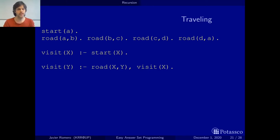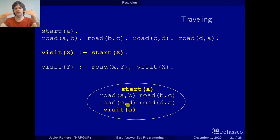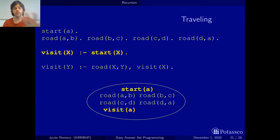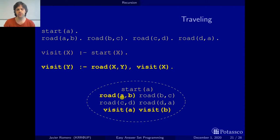Let's see how to find the answer sets of this program. Initially we can apply the facts and we start with them. Then after applying the rules — instead of showing the whole graph, I am only showing the sets we are building at each step. Since we have no choice rules, at each step there will be a unique set. When we apply the rule that tells us that for every x if we have start(x) then we must also have visit(x), since we have start(a) we add visit(a). Now we go to apply the recursive rule: we have road(a,b) and we have visit(a), so we add visit(b).